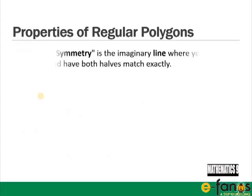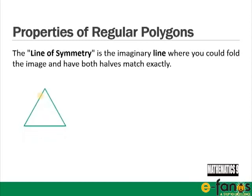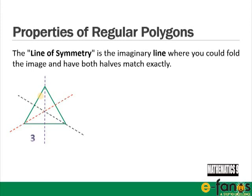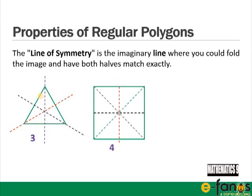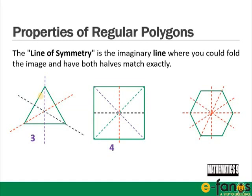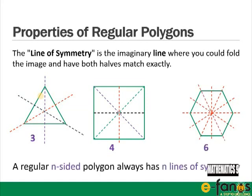A line of symmetry is the imaginary line where you could fold the image and have both halves match exactly. A regular triangle has 3 lines of symmetry, a square has 4, and a hexagon has 6. A regular n-sided polygon always has n lines of symmetry.